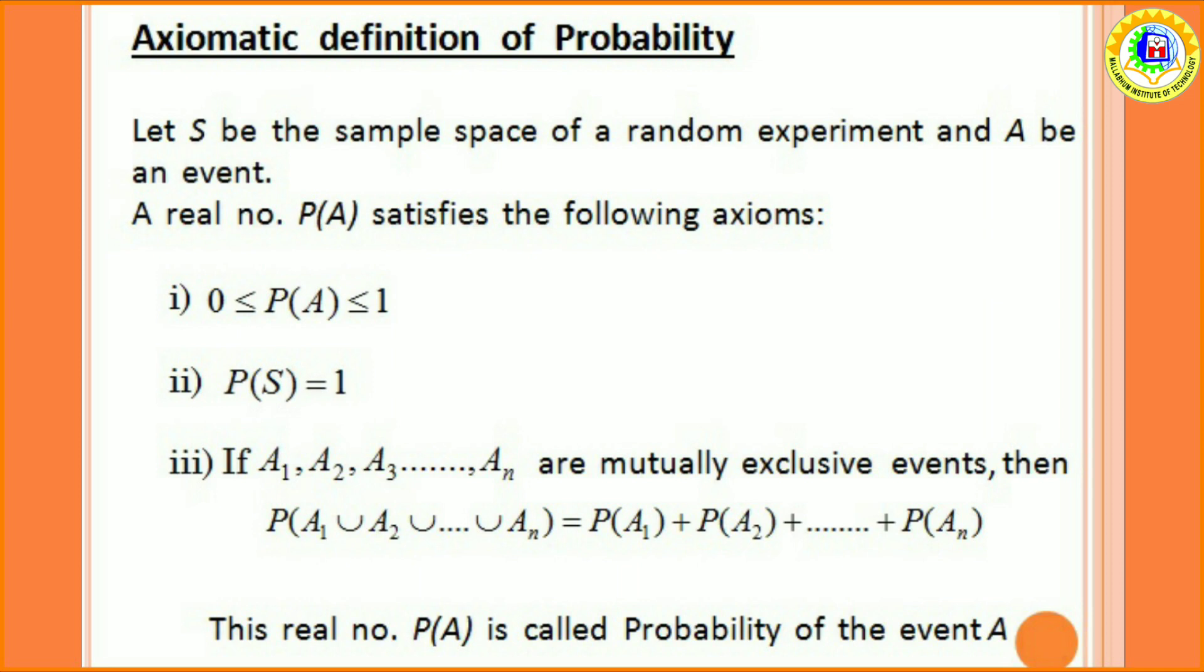Number three, if A1, A2, A3 are mutually exclusive events, then P of union of all events is equal to P of A1 plus P of A2 plus P of A3 and so on. This real number P of A is called probability of the event A.